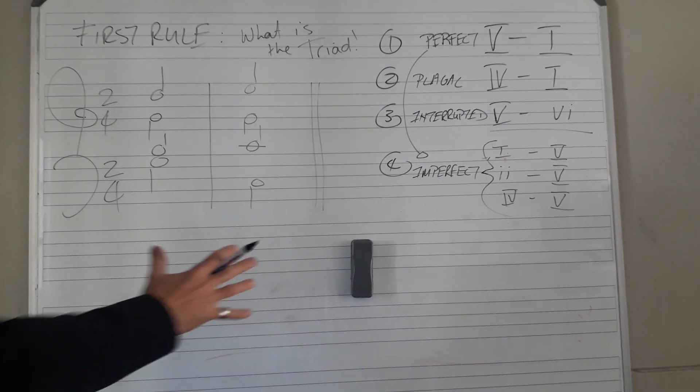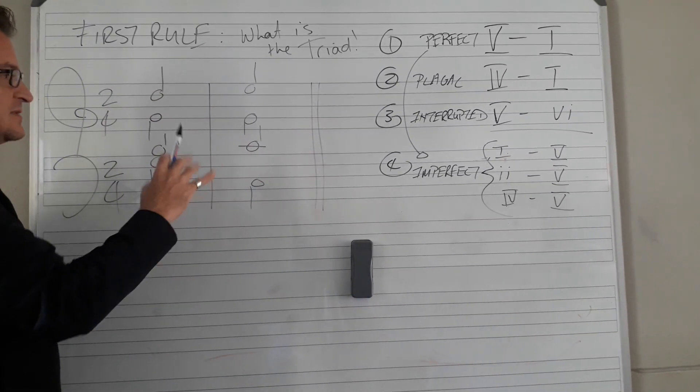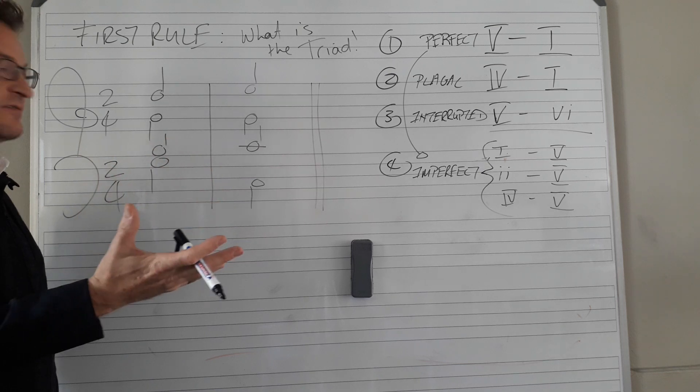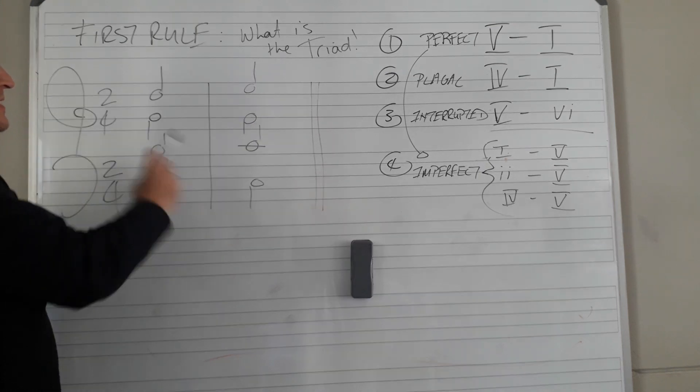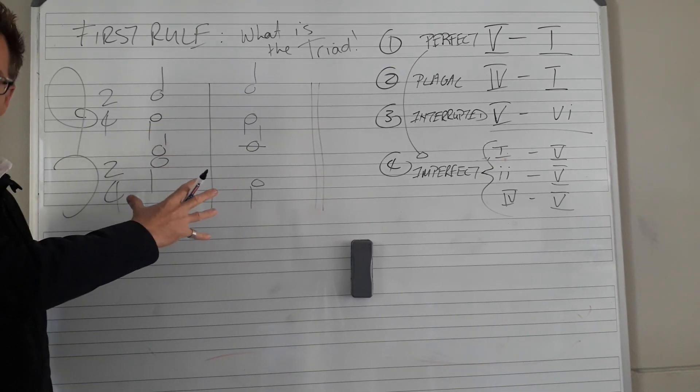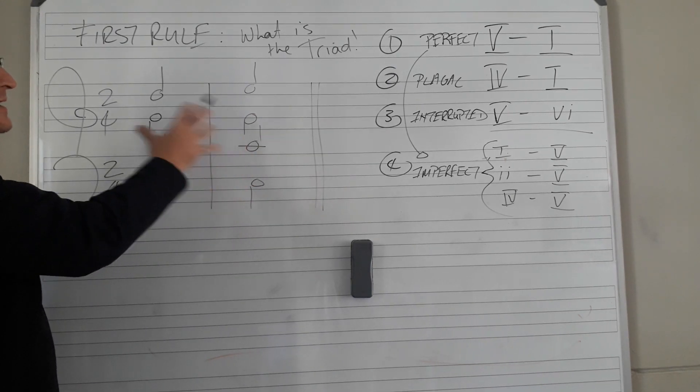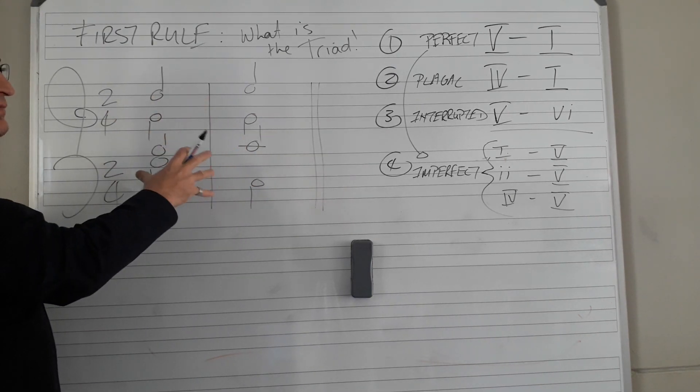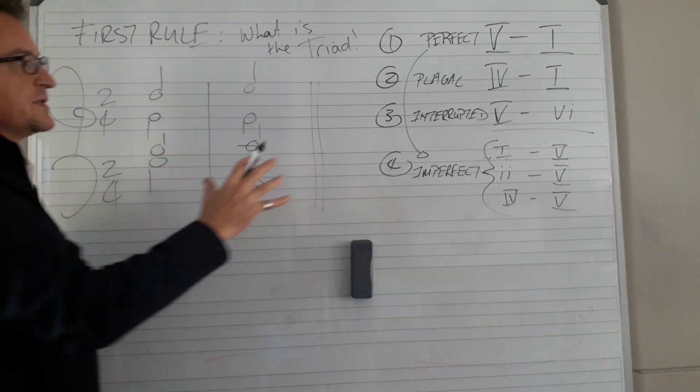The topic here is how to analyze four parts, specifically from the Grade 5 Trinity paper. They give you something like this and ask which cadence is it. So it has to do with analyzing this in four parts.